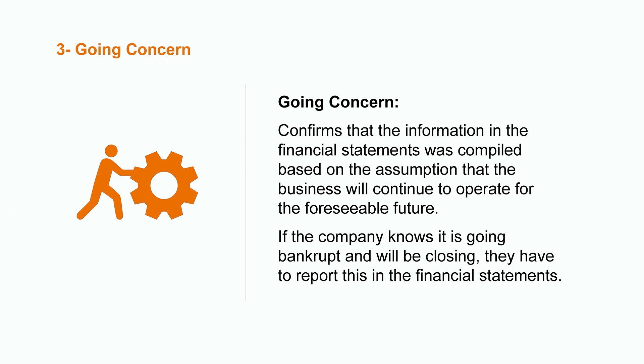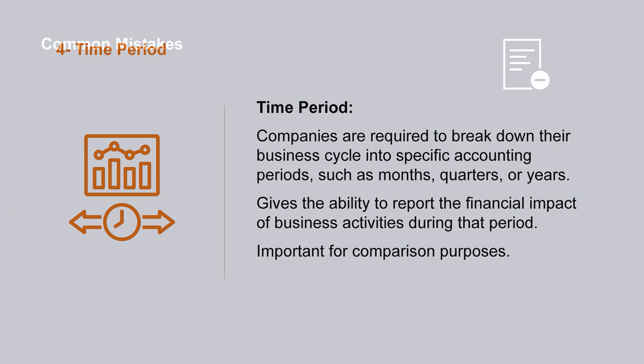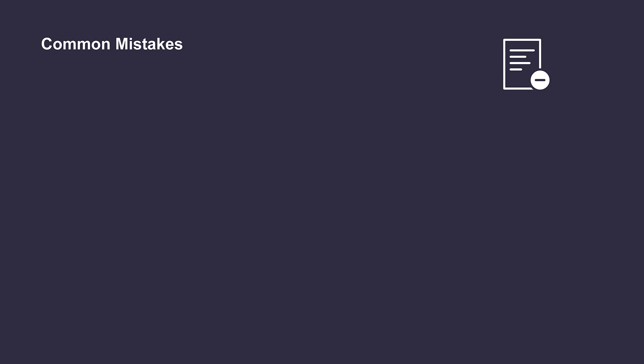The fourth and final accounting assumption is the time period assumption. Companies are required to break down their business cycle into specific accounting periods such as months, quarters, or years. This gives them the ability to report the financial impact of business activities that took place in each period — extremely important for comparison purposes, whether an investor is comparing a company's current results to past performance or to another organization.